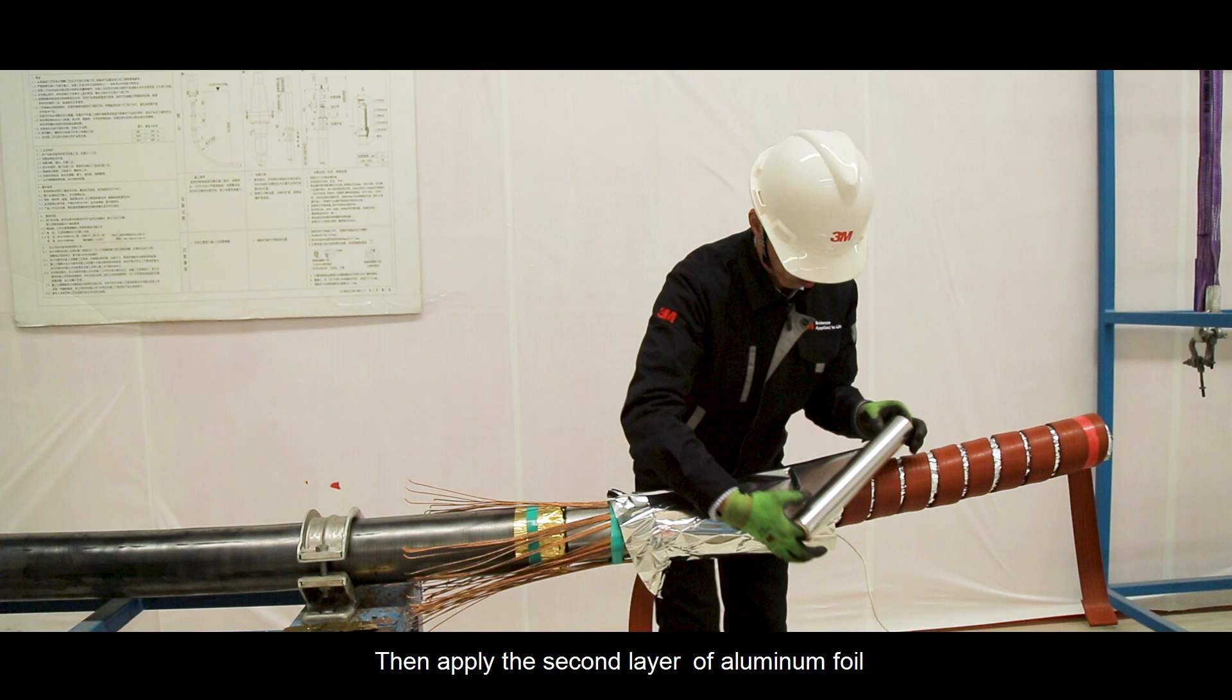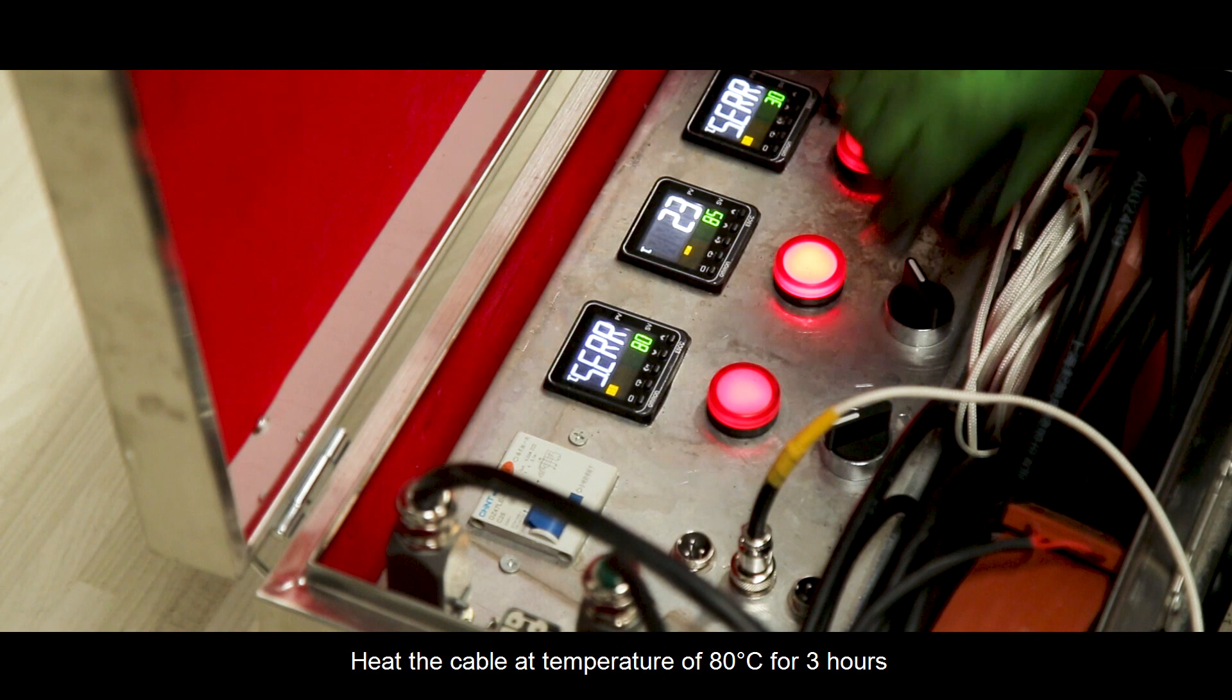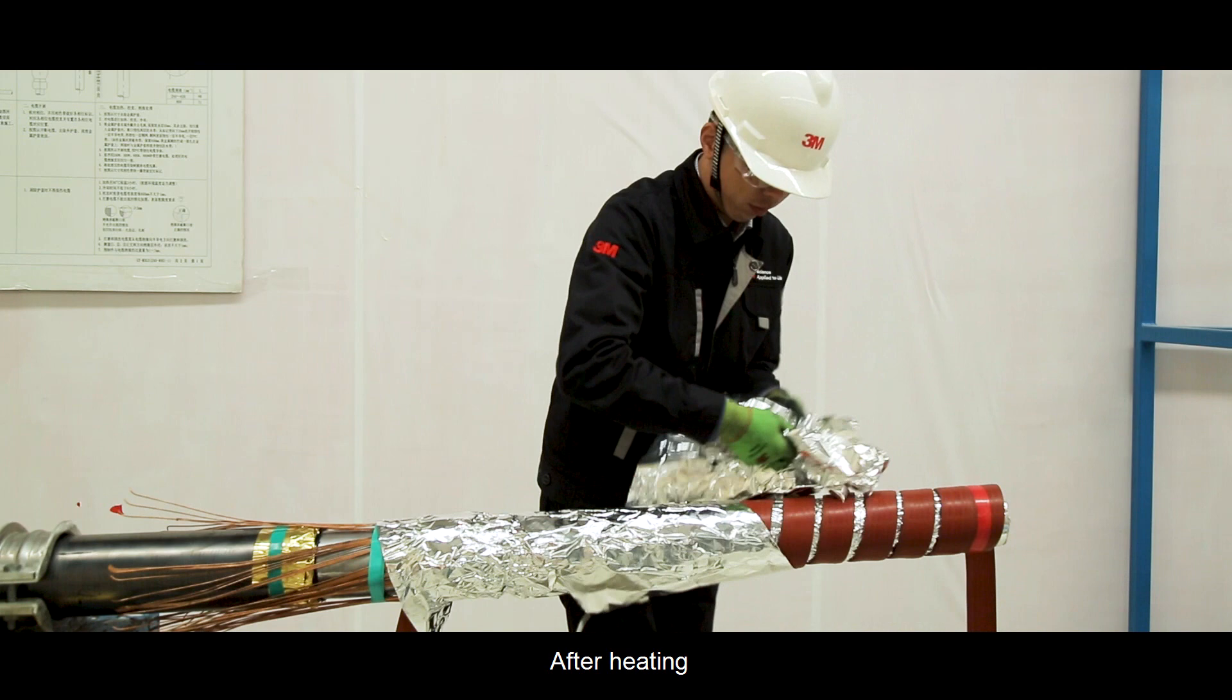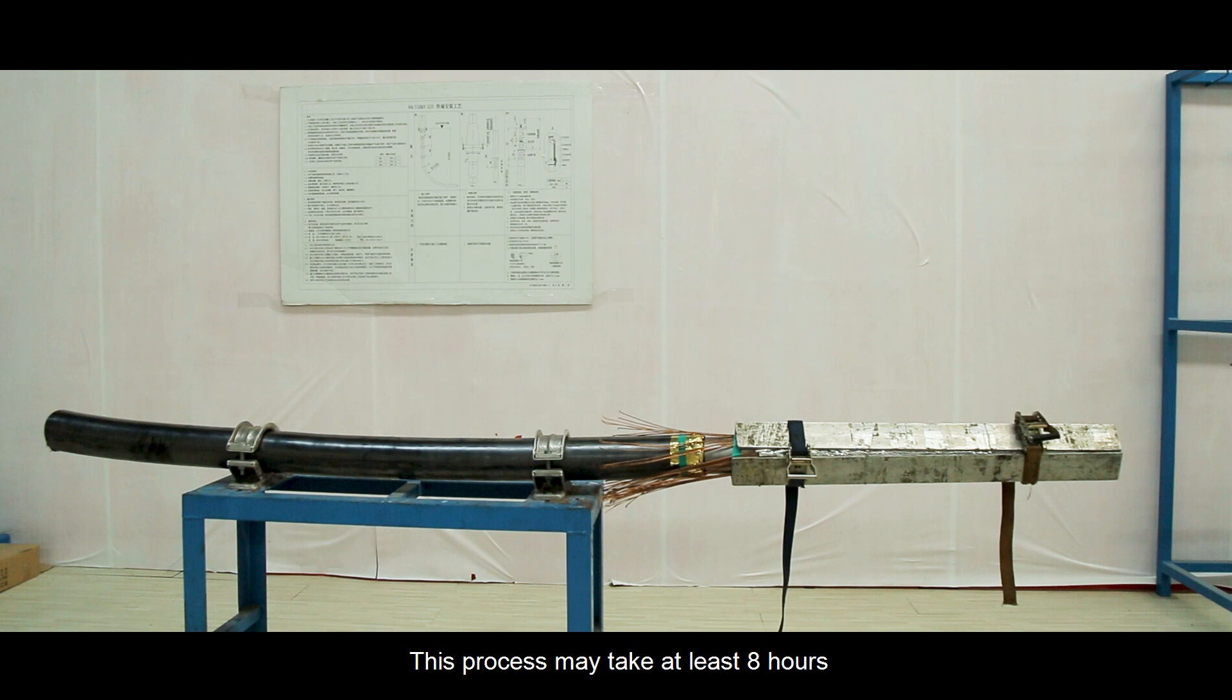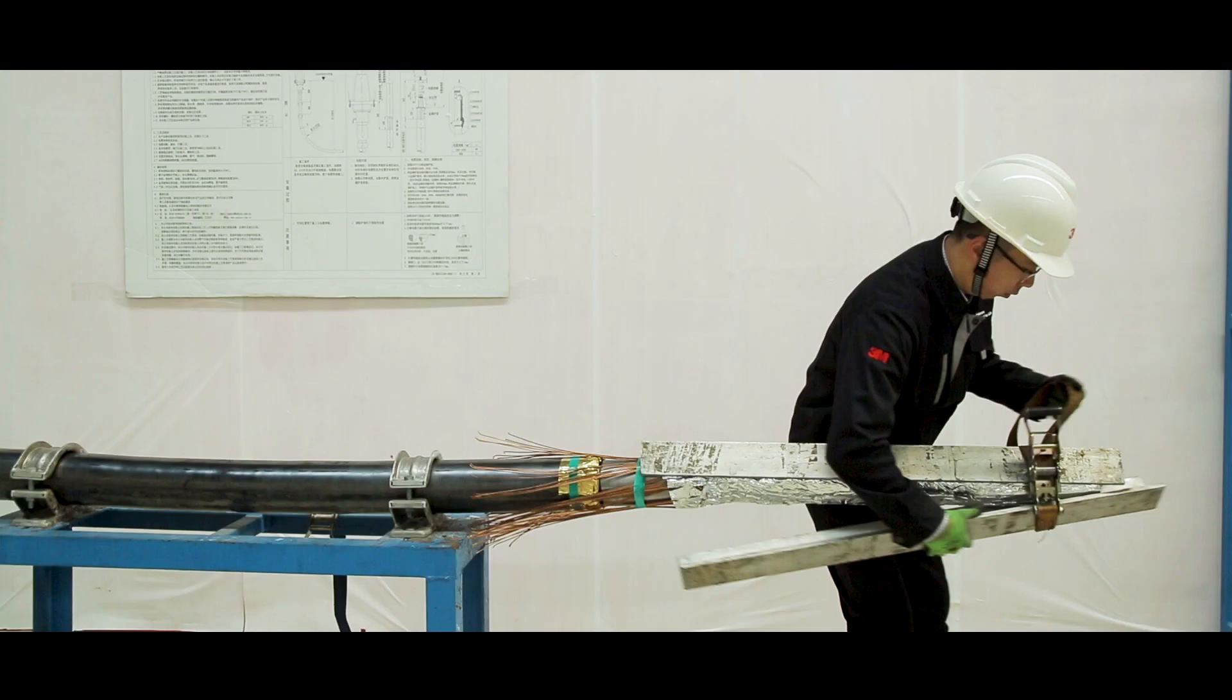Then apply the second layer of aluminum foil covering the heating tape. Heat the cable at temperature of 80 degrees Celsius for 3 hours. After heating, use angular aluminum plate to keep the cable straight and let it cool down to room temperature naturally. This process may take at least 8 hours.